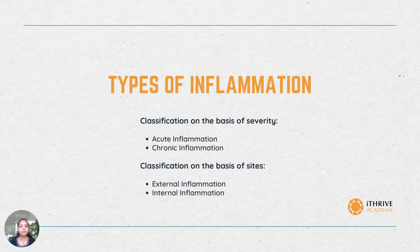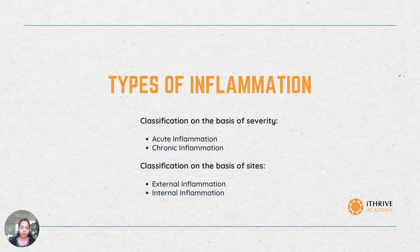Moving towards the types of inflammation. On the basis of severity of inflammation, it is divided into two types: acute inflammation and chronic inflammation. Acute inflammation is an immediate response to a variety of infections, allergens and toxins, which is of a short period of time. While chronic inflammation, on the other hand, is usually long-standing and could be the result of underlying chronic diseases.